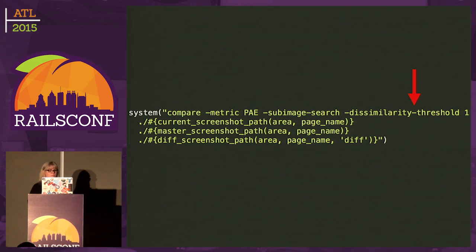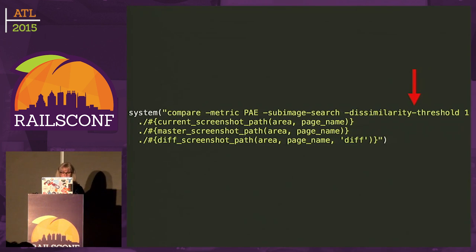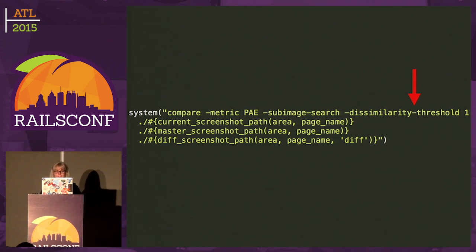Another thing we ran into was sometimes our screenshots were completely different — but only for testing, not on our actual website — and ImageMagick wouldn't even give us a diff because the images were so different. We found an option called the dissimilarity threshold, which determines how different two images can be in order to diff them. It defaulted to 0.2 or 20%, so we upped that to 1, meaning the images could be completely different. Generally you don't need to do that, but doing diffs on completely different images can slow down your tests, and since the tests are separate from our main specs, it's not a huge issue.